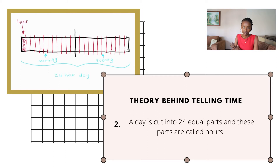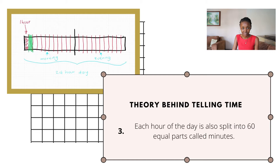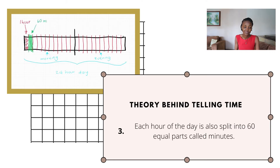The third fact your child needs to know is that each hour is split into 60 equal parts, and these parts are called minutes. Go back to your visual aid and illustrate this by sectioning maybe just one hour into 60 equal parts representing the minutes.